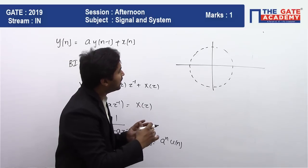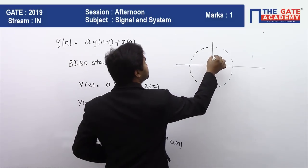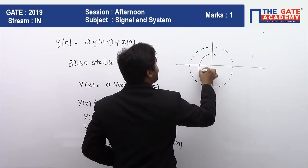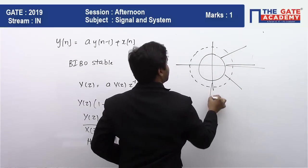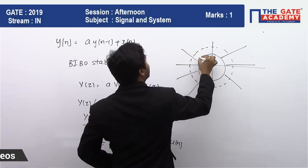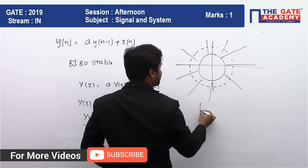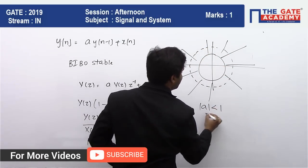So let me consider the unit circle is somewhere like this, and we have considered a function which is causal in nature. So we know the ROC is going to be outwards. In such a case, the value of a should be within the unit circle.